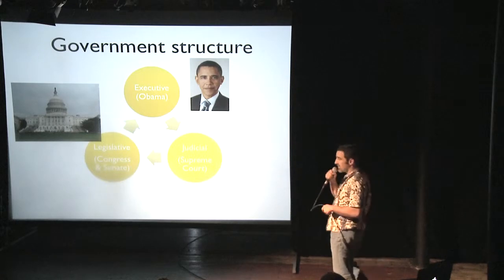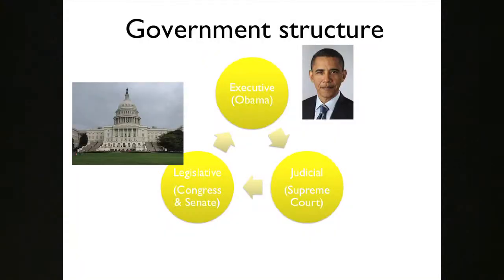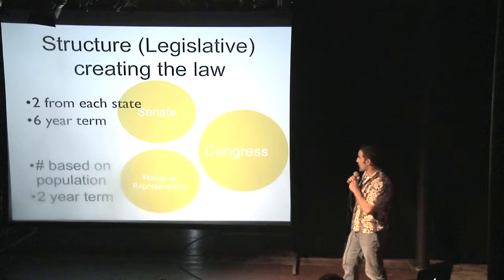The laws are created in the legislative branch, where there's two houses — the Congress and the Senate. They create the laws, and they're passed on to the president in the executive branch. He then vetoes them, and then they are handed off to the people who decide they like them or don't in the judicial branch.